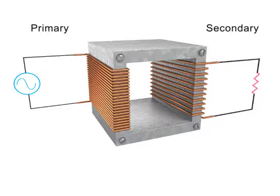Transformers can either step up or step down a voltage. In a step down transformer, the number of turns in the primary coil is greater than the number of turns in the secondary coil.